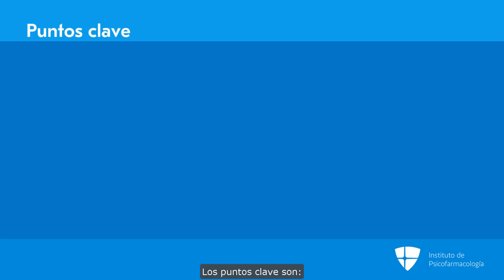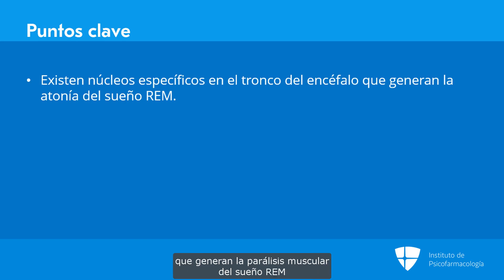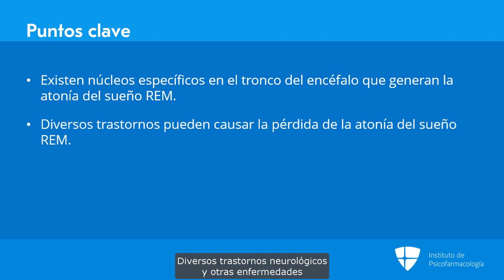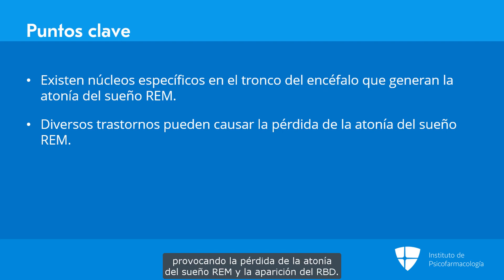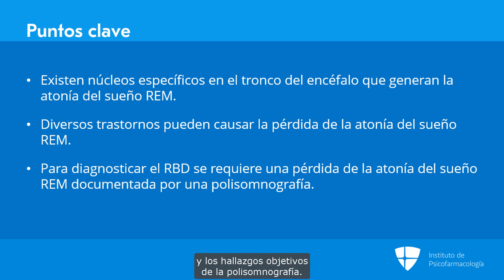Key points: specific nuclei in the pons and medulla in the brainstem generate the muscle paralysis of REM sleep, called REM atonia. Various neurological and other disorders can damage these brainstem nuclei, causing loss of REM atonia and emergence of RBD. Lastly, loss of REM atonia as an objective finding from polysomnography is required to diagnose RBD.